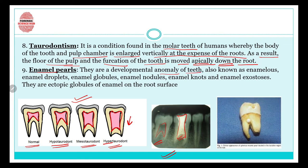Then comes enamel pearls — a developmental anomaly of teeth, also known as enamel droplets, enamel globules, or enamel nodules. They are ectopic globules of enamel on the root surface. You can see in this picture there is a globule-type structure on the root area — this is an enamel pearl.